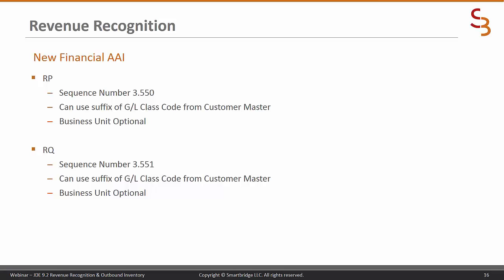Now let's talk about the two new financial AAIs: RP and RQ. For RP, there is an example to copy for company 000 at sequence 3.550, and you are asked to use that same sequence number when you define yours. If you define a company-specific AAI, you can also use the suffix just like in other financial AAIs. I put the GL class code from the customer master as the suffix of my RP AAI. Business units are optional.